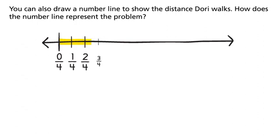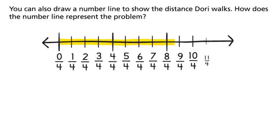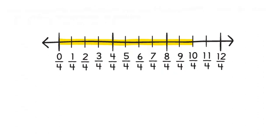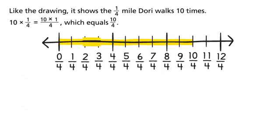You can also draw a number line to show the distance Dory walks. How does the number line represent the problem? Like the drawing, it shows the one-fourth mile Dory walks ten times.